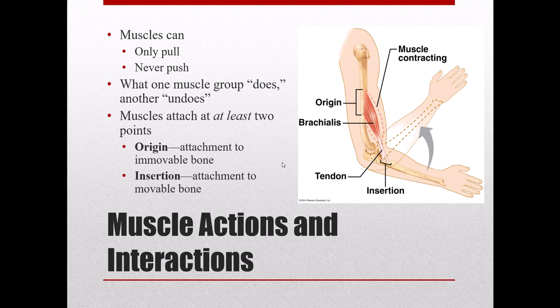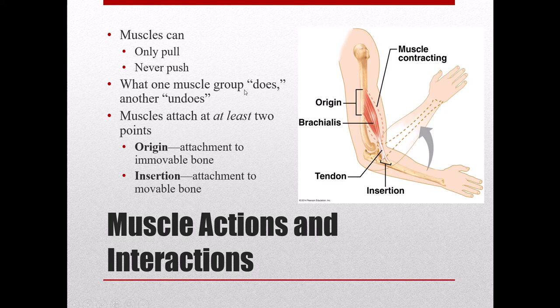The thing about muscles is that they can only pull. They're attached to bones, and muscles can't push — they can only pull on the bones. However, we can do motions that are opposite to each other; we can both flex and extend the forearm. Essentially, what one muscle does — flex the forearm by pulling — another muscle undoes by pulling the bone in the other direction. Muscles attach to our skeleton at at least two points.